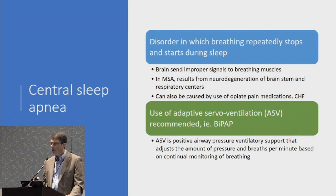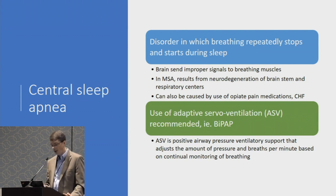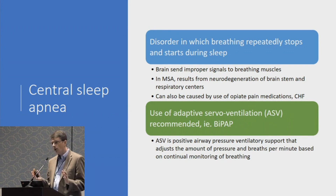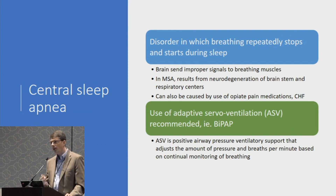Special mention should be given to central sleep apnea in multiple system atrophy. In addition to obstructive sleep apnea, this can also be a central issue — a brain issue — where the brain is sending the wrong signals to the breathing muscles, just as it can send wrong signals to blood pressure centers and urinary centers. This sometimes requires a different form of breathing apparatus, such as a BiPAP.